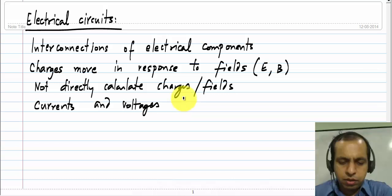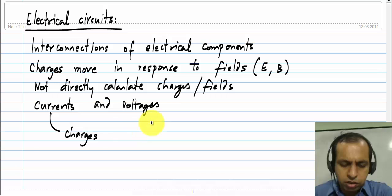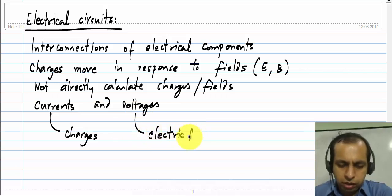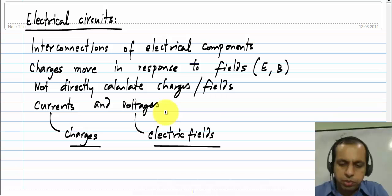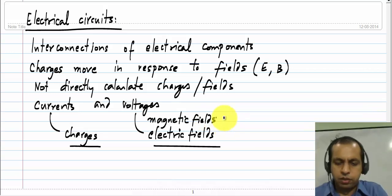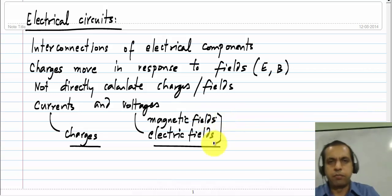which effectively represent charges and electric fields in some way. So this could also be related to the magnetic field as well. So we will deal with currents and voltages.